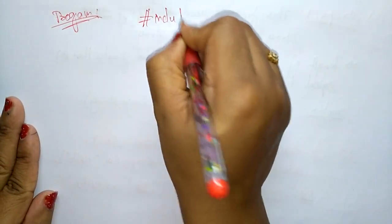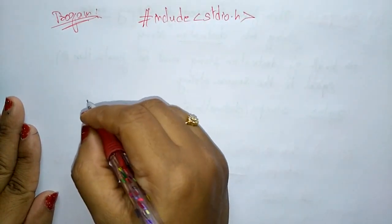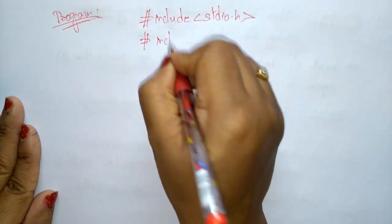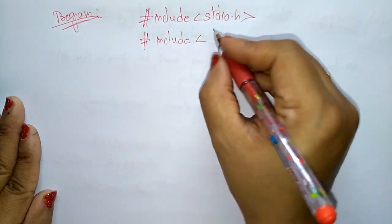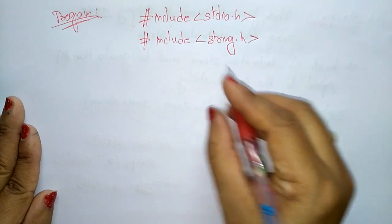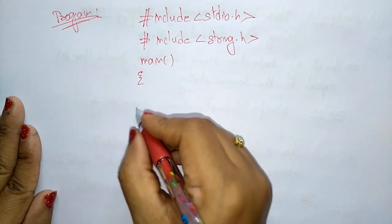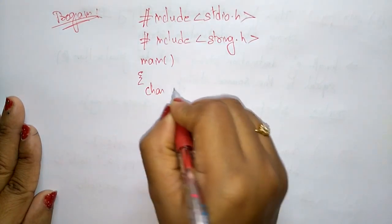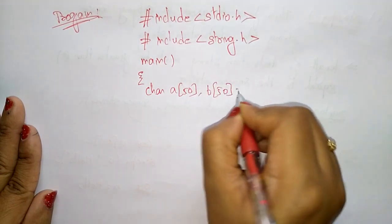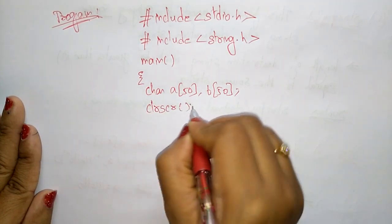Now let us see the program for string copy. We write #include <stdio.h> and also include string.h because we are accessing predefined functions present in the string.h file. In main, we declare two character arrays a and b of size 50, and call clrscr.